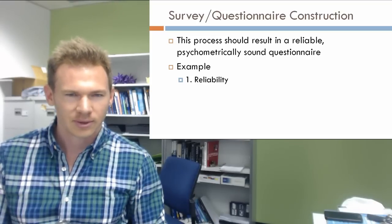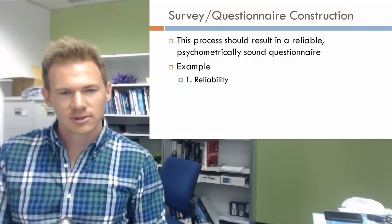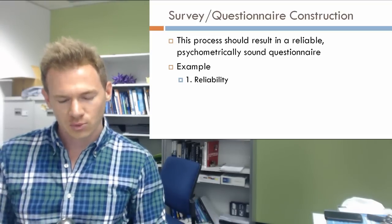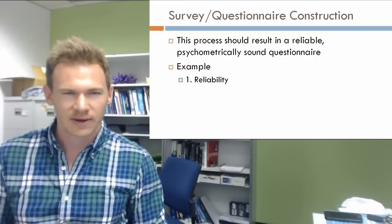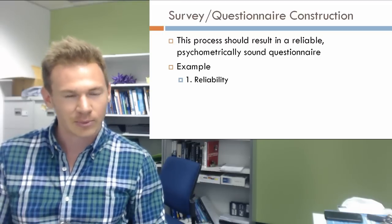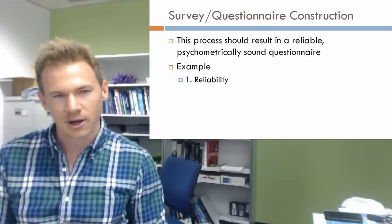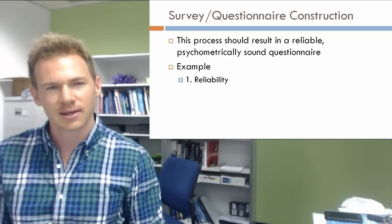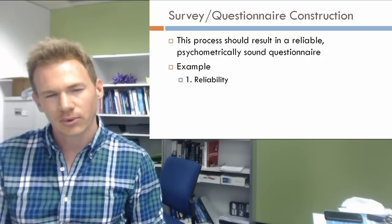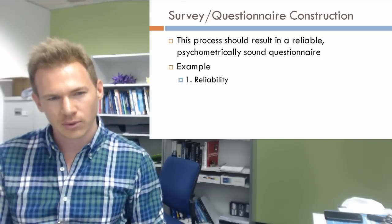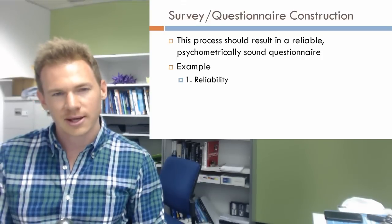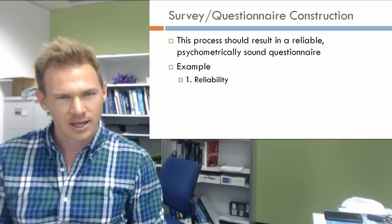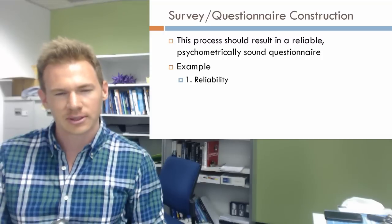Once we've conducted these factor analyses and come up with our final set of items, we then need to test the reliability of the questionnaire. Cronbach's alpha is how we test for internal reliability using SPSS.